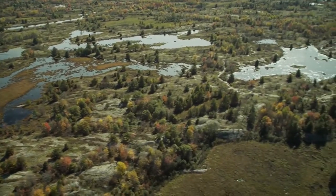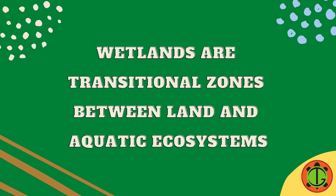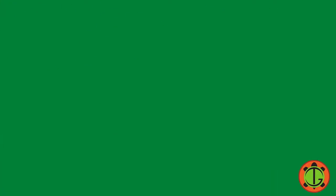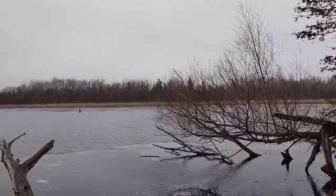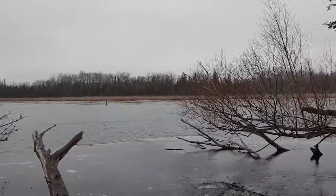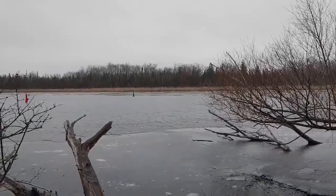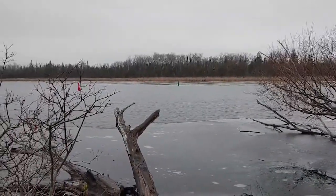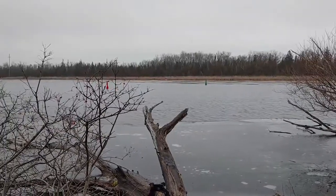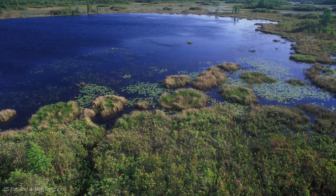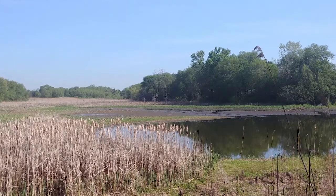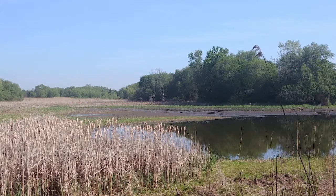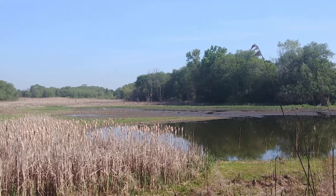So you might be wondering, what is a wetland? Well, wetlands are transitional zones between land and aquatic ecosystems. When soil is covered with water for more than 45 days in a row, the physical and chemical properties of the area change, and this is when wetlands are formed. Some wetlands are permanently flooded with water, while others are only seasonally flooded, but their soil still remains wet throughout the year.